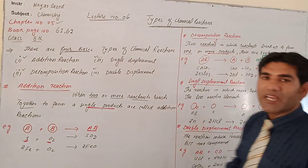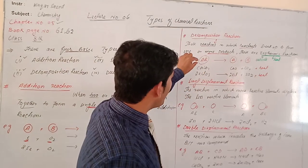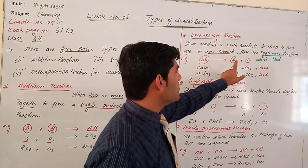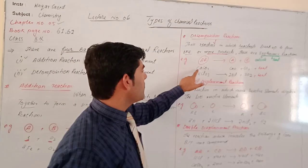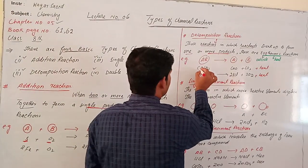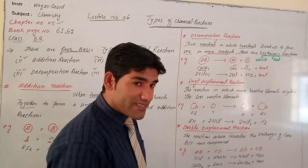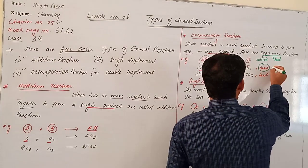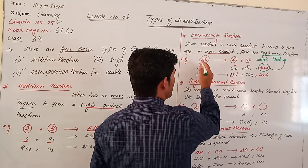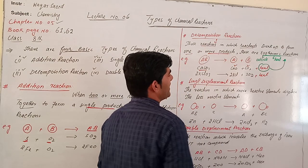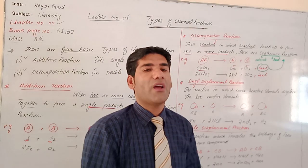Those reactions in which heat is evolved are called exothermic reactions. In decomposition, 1 reactant will decompose into 2 or more products. For example, calcium carbonate when decomposed gives rise to calcium oxide and carbon dioxide, plus heat. This heat indicates it is an exothermic reaction. So this single reactant breaks up to form 2 products — the reactant decomposes into 2 or more products.